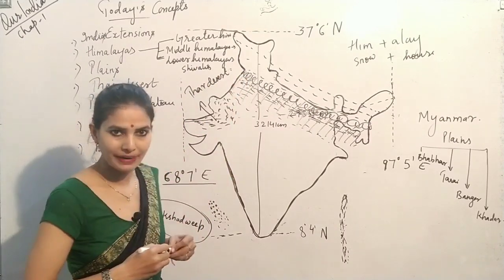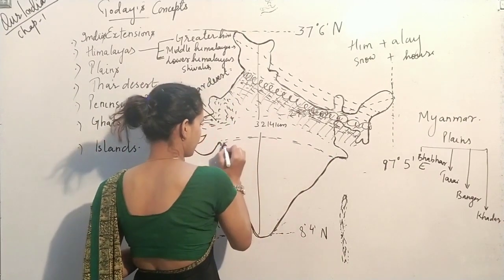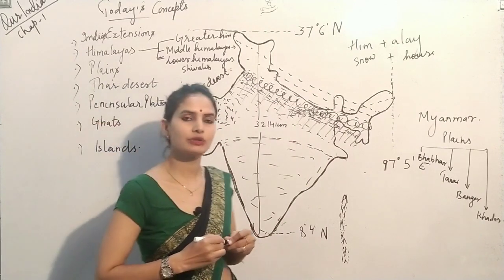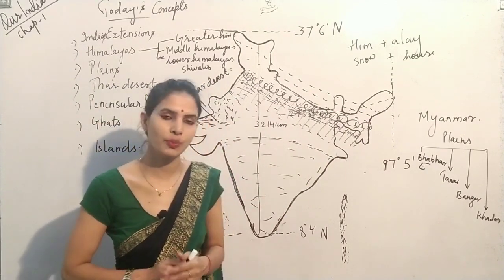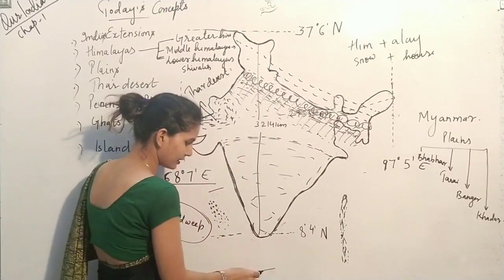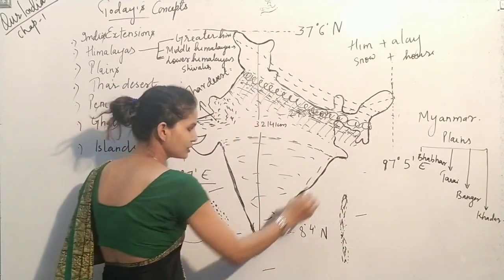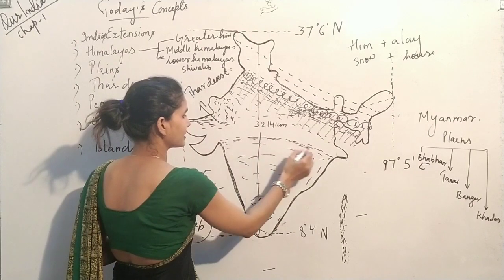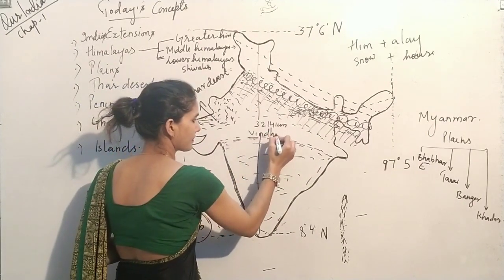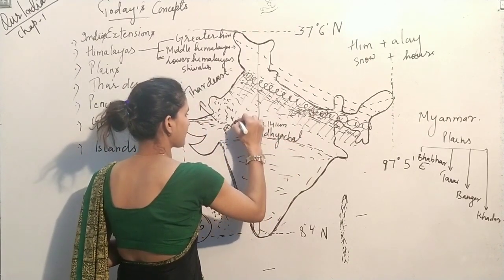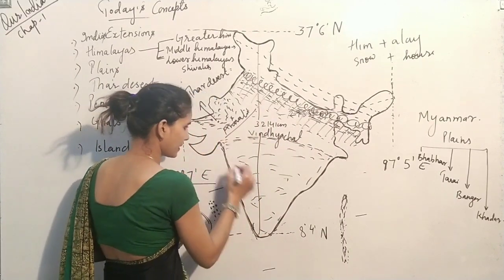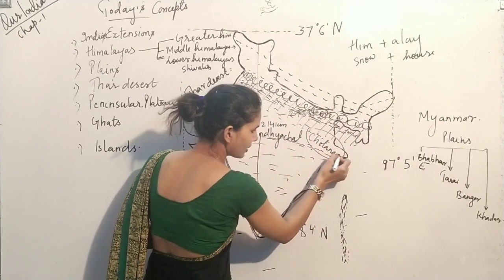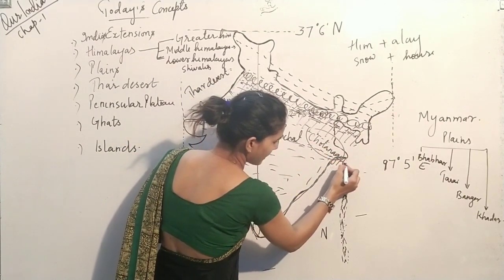Next is the Peninsular Plateau. This triangular-shaped land mass is known as the Peninsular Plateau. A peninsula is a land part surrounded by water from all three sides — in the south, west, and east there is water. The Peninsular Plateau is surrounded by main features like the Vindhyachal in the north, the Aravallis in the northwest, the Ghats in the west and east, and the Chota Nagpur Plateau. The Chota Nagpur Plateau is very rich in minerals and resources.